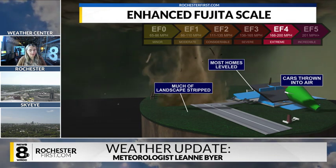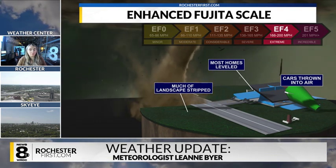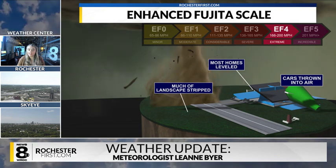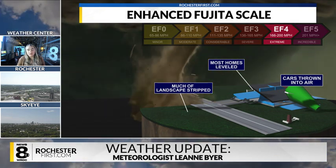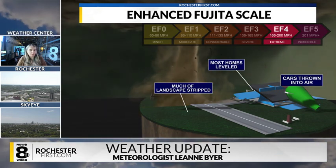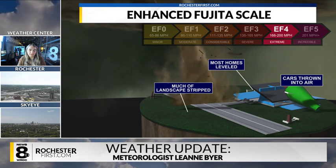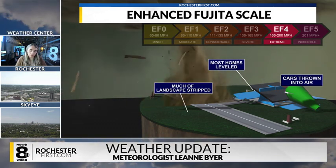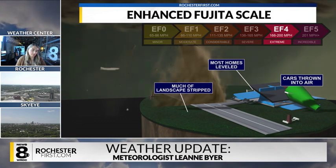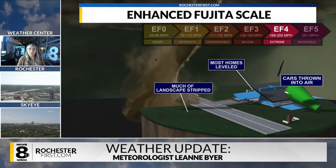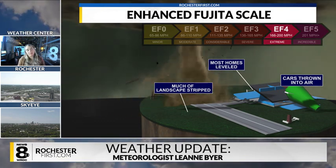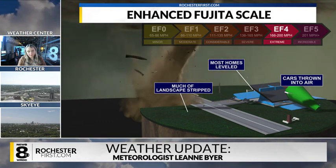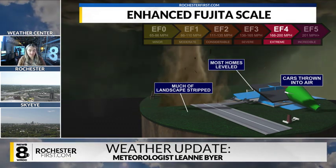It's always good that most people in those areas usually have storm shelters or basements where they can safely stay. The amount of damage at this level is extreme — much of the landscape is stripped, most homes are leveled, and cars can be thrown in the air. It is pretty catastrophic.